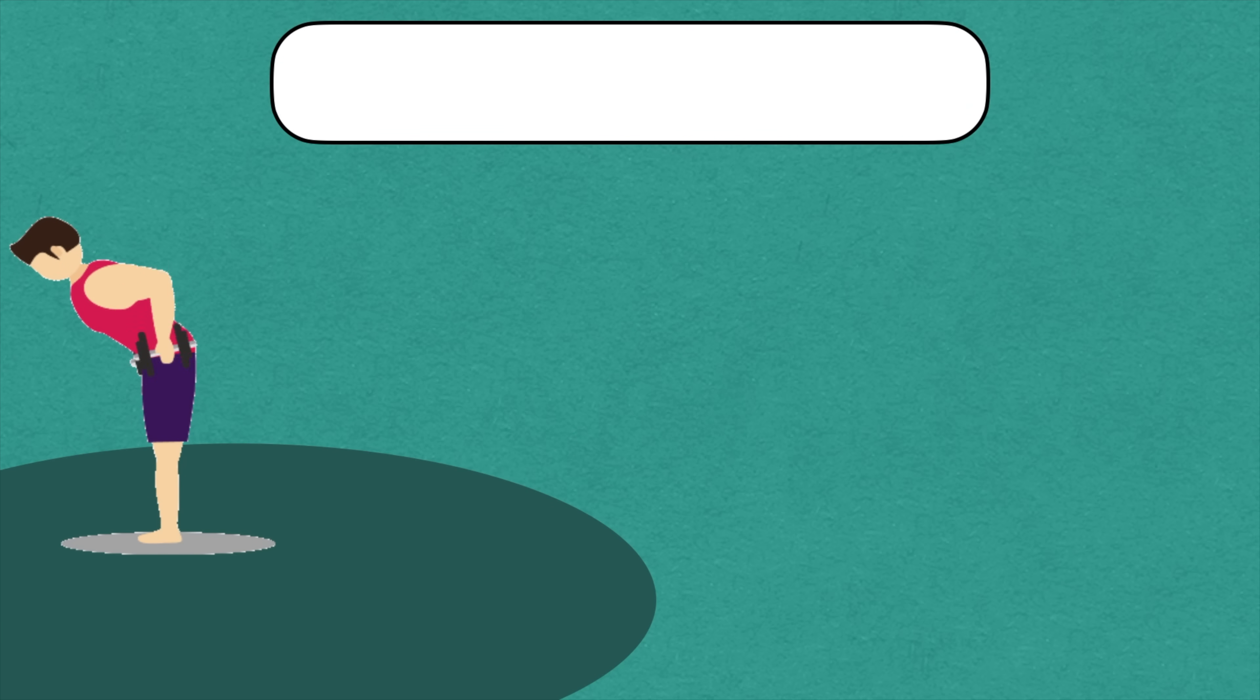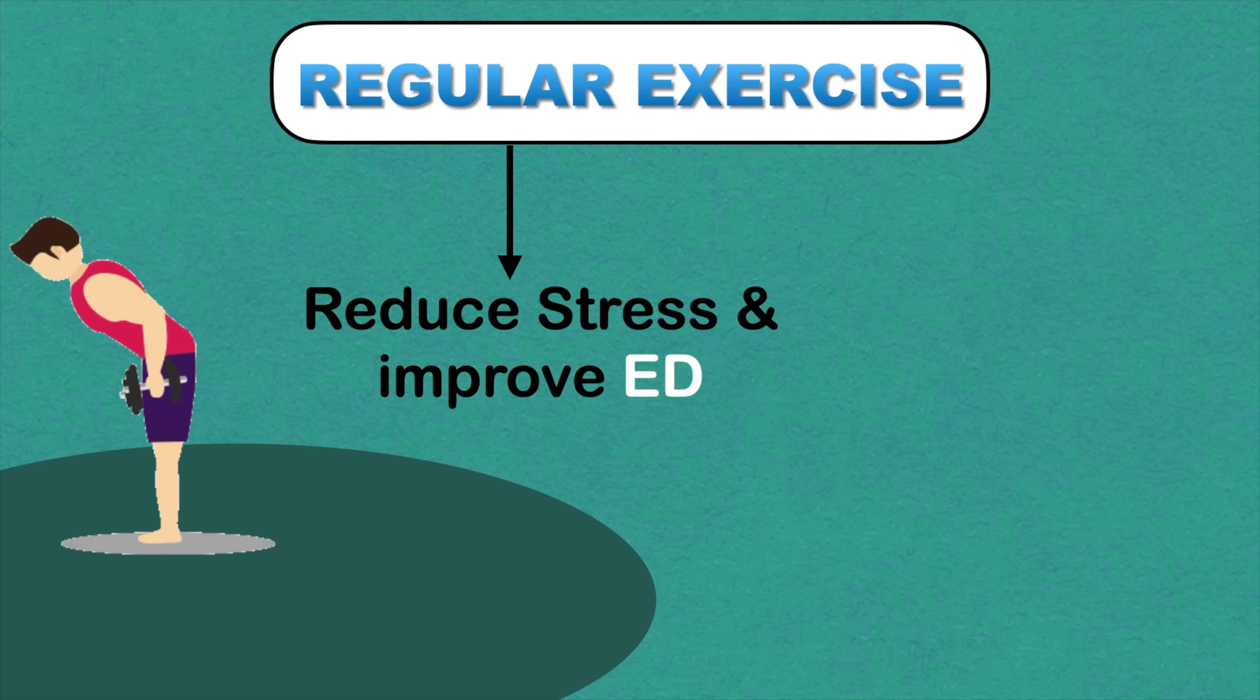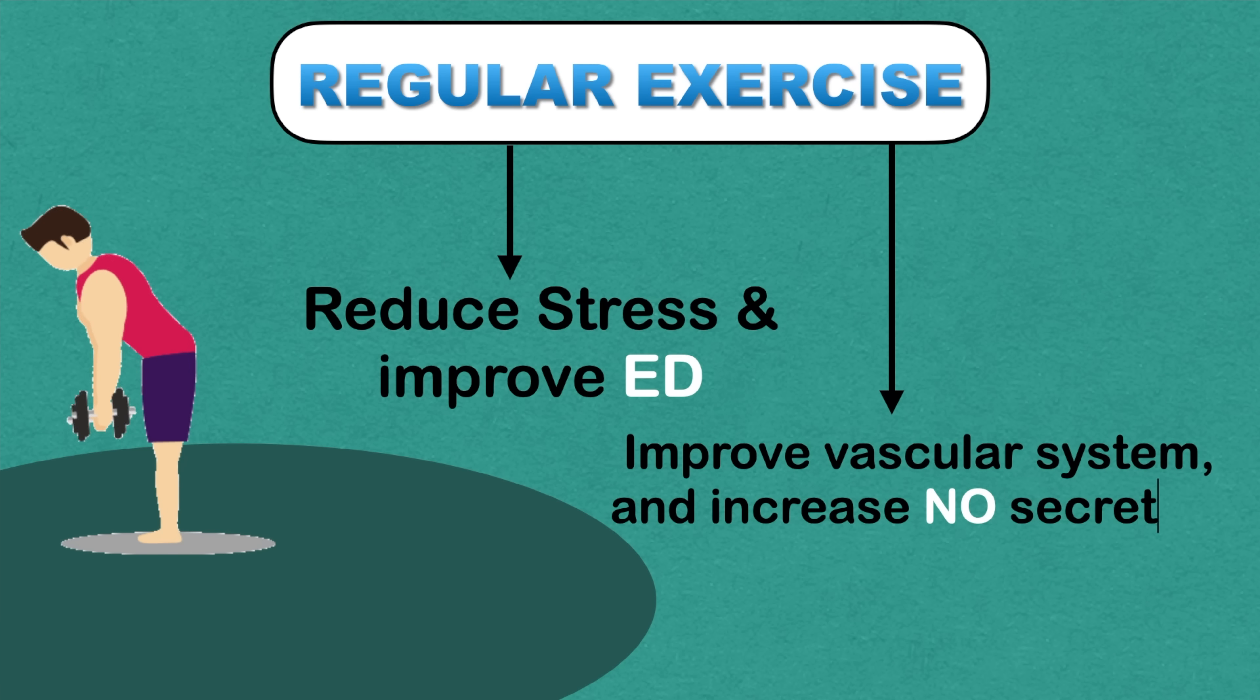Now the next thing you should do is regular exercise. There are several benefits of regular exercise. It helps to reduce our stress which is very important to treat erectile dysfunction. It can also improve your vascular system, endothelial cells and increase nitric oxide secretion. So regular exercise is the key for healthy erection.